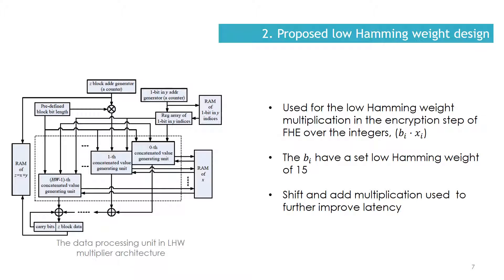Secondly, the proposed low Hamming weight multiplier uses an optimized data processing unit to compute a multiplication with one low Hamming weight multiplicand. The one-bit indices of the low Hamming weight multiplicand are known in advance. These indices are used to determine which blocks of the other multiplicand are to be shifted and accumulated using the traditional shift-and-add multiplication method to further improve latency.